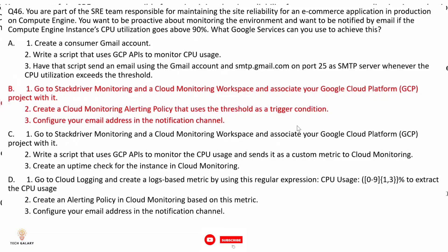Option B: go to Stackdriver Monitoring, create a Cloud Monitoring workspace, associate your GCP project with it, create a Cloud Monitoring alerting policy that uses the CPU threshold as a trigger condition, and configure your email address in the notification channel. This is correct because Stackdriver gives timely awareness to problems in the cloud application. By associating the project with Stackdriver, you can create an alerting policy that triggers when CPU utilization exceeds 90%.